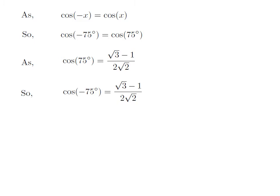So we get the value of cosine of minus 75 degree is equal to square root of 3 minus 1 upon 2 into square root of 2.